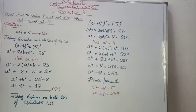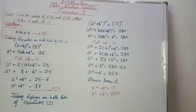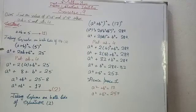Taking square on both sides of Equation 1: (a + b)² = 5². Applying the formula, the left-hand side becomes a² + 2ab + b².